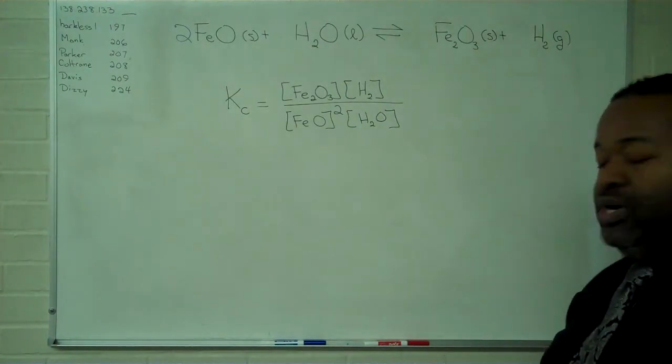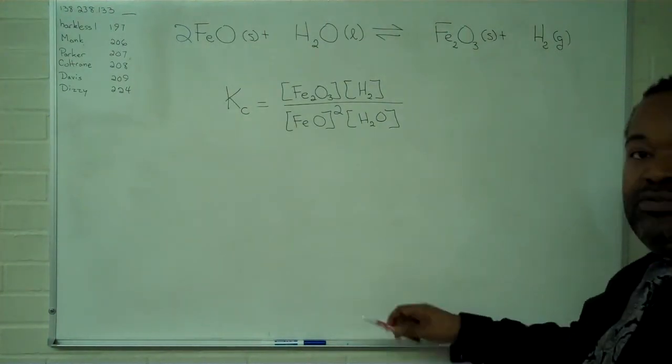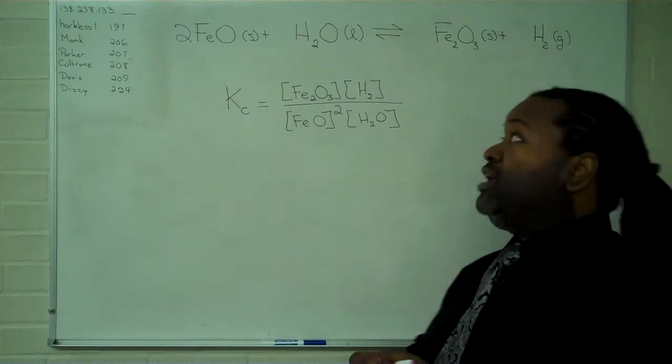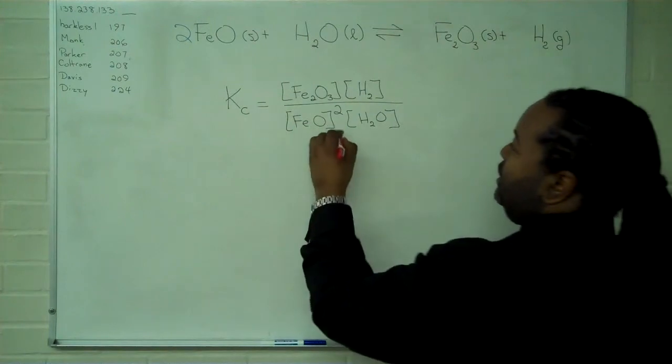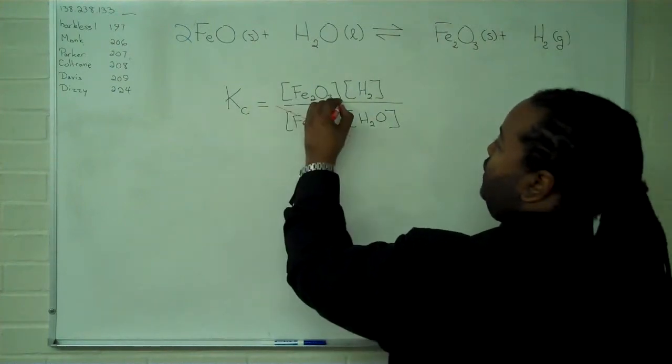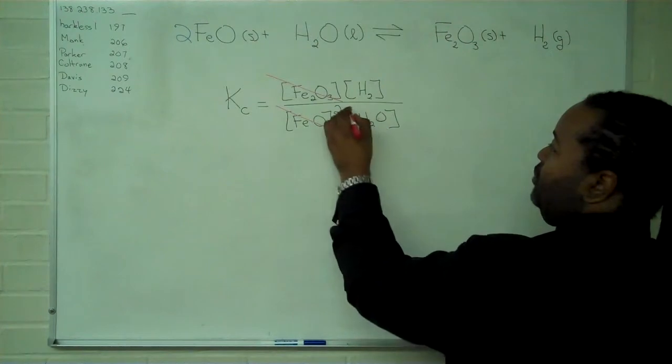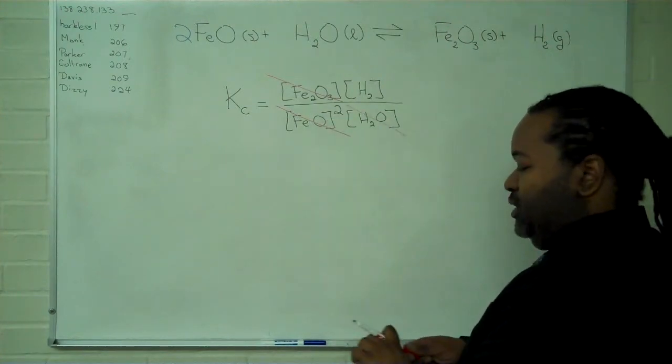Now that we've written out products over reactants, the last thing we have to do is make sure we only keep the parts that matter. Because our iron two oxide and iron three oxide are both solids, these will be cancelled out. And because water is a pure liquid, it will also be cancelled out.